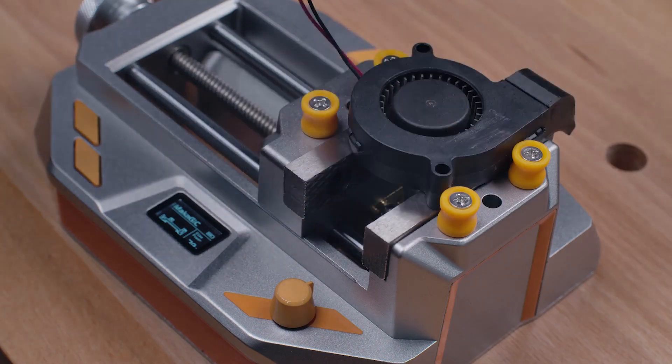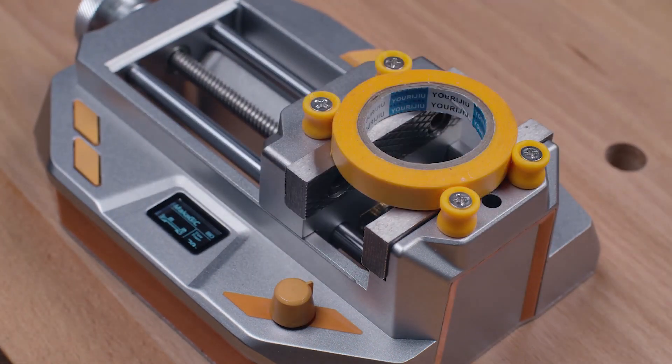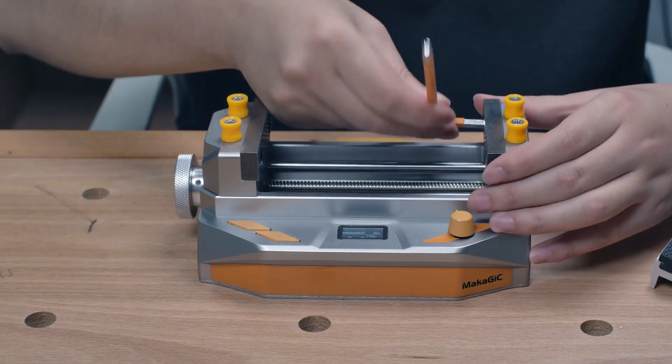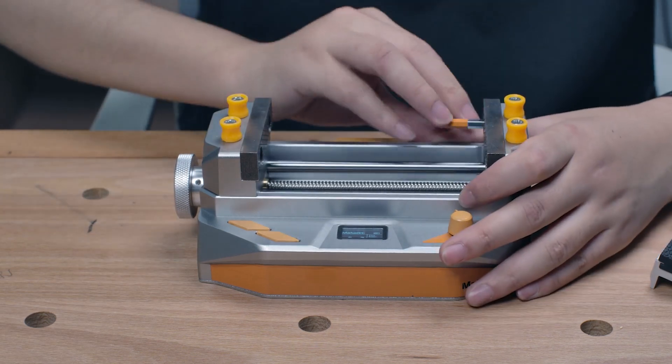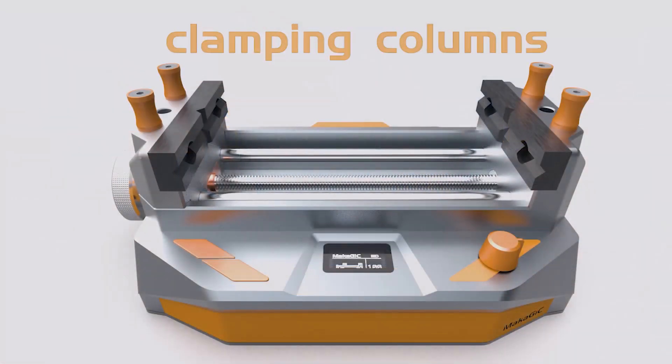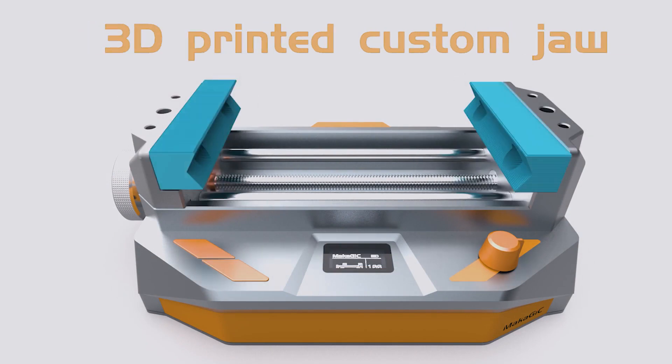We added a clamping column design to ensure objects can be firmly clamped. The jaws can be easily removed and replaced with different materials and shapes to suit the objects you need to clamp.